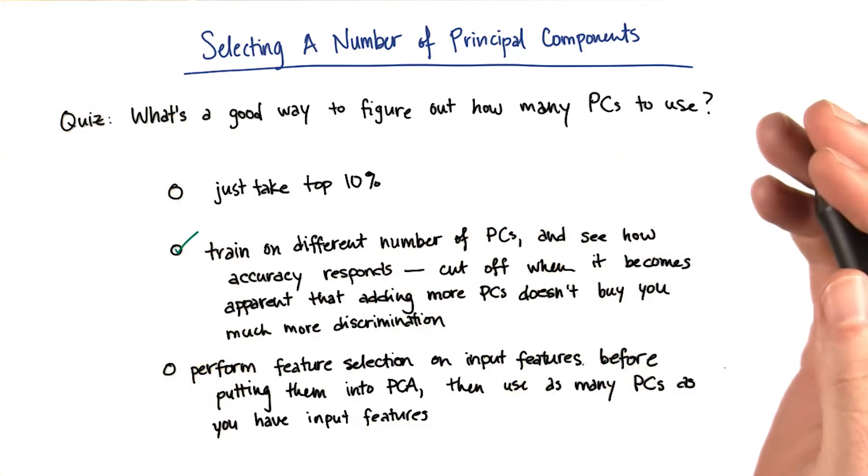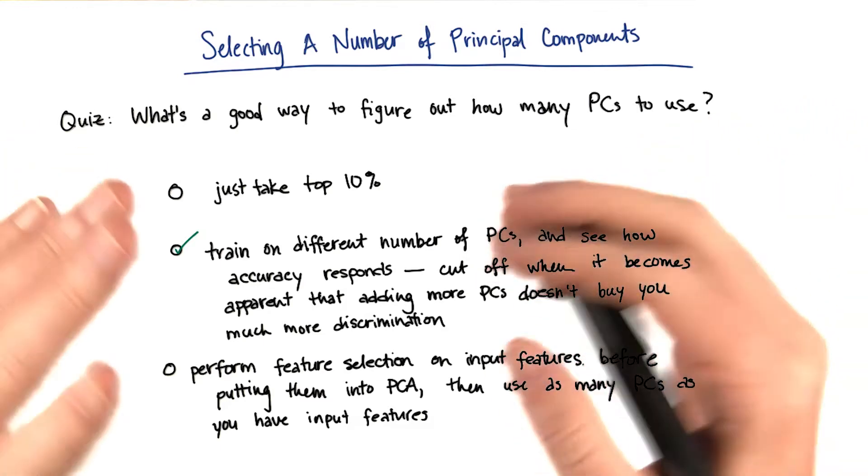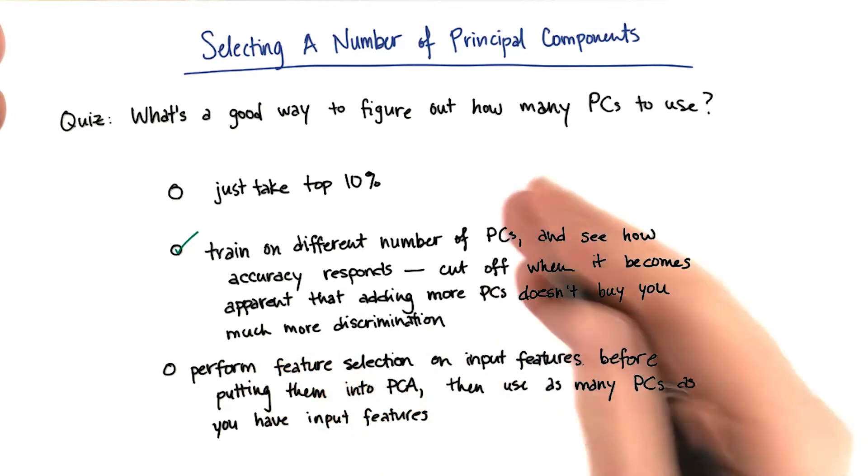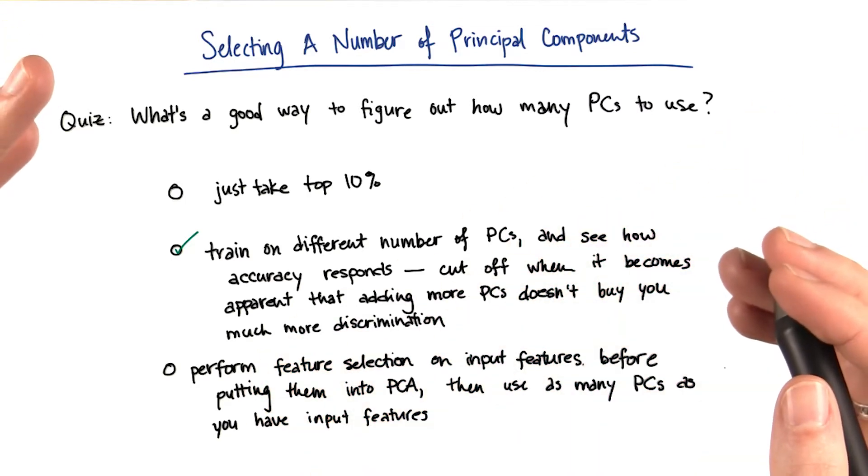You can also do this in just plain old feature selection as well. You say, give me all the features in the order of their importance, and I'm just going to try adding them one at a time and see how the accuracy responds. And cut off when it seems like it's plateauing.